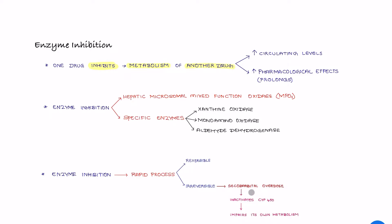To give an example of irreversible inhibition — if we take secobarbital, when the dose of secobarbital increases, it inactivates the cytochrome P450 enzyme. By inactivating the cytochrome P450 enzyme, it impairs its own metabolism. Please remember: secobarbital, by inactivating the enzyme required for its own metabolism, leads to increased secobarbital levels, further leading to secobarbital overdose and toxicity. This is the adverse consequence of enzyme inhibition.